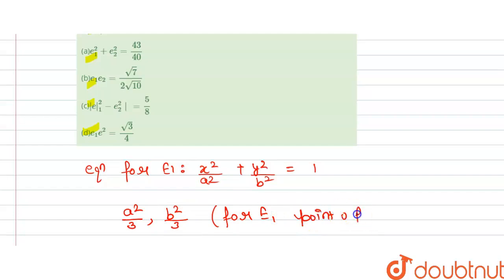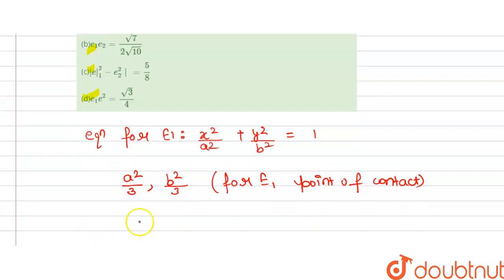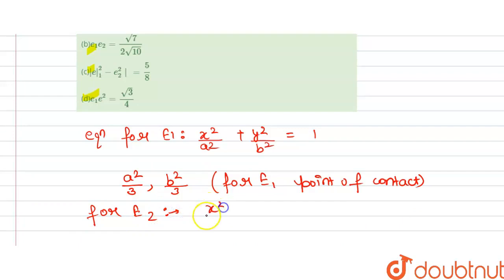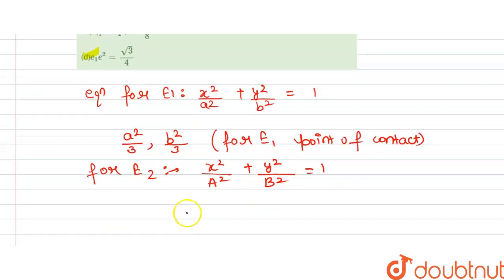Now for E2, we have the equation x²/A² + y²/B² = 1, and we have the point giving A² and B²/3 for the E2 point of contact.